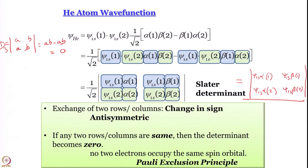This is what leads to our very familiar Pauli exclusion principle. Pauli exclusion, as we may have learned earlier, excludes the possibility that two electrons in an atom have all four quantum numbers the same — if n, l, m are the same, at least ms must be different. What we are saying now in a more quantitative manner is that no two electrons can occupy the same spin orbital. Very beautifully, using the concept of Slater determinants, we arrive at the Pauli exclusion principle.